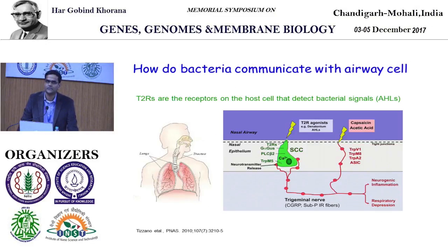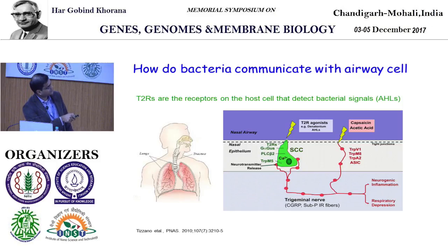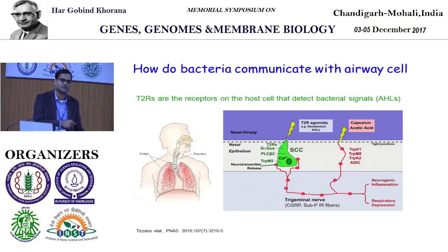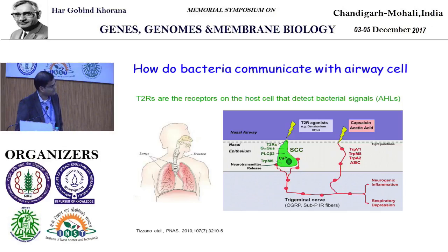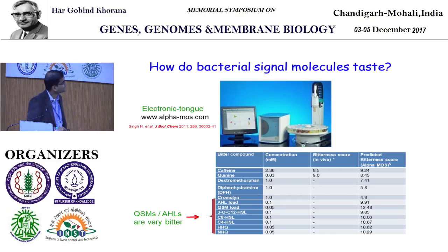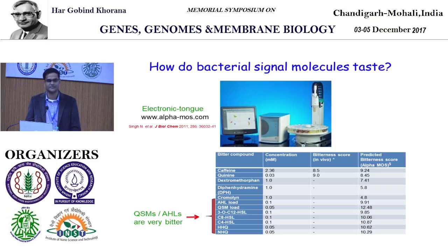Coming to the relationship between T2Rs and quorum sensing: the first study published in 2010 suggested that quorum sensing molecules — AHLs — along with T2R agonists can activate airway cells through T2Rs. After that, many studies in journals including chronic rhinosinusitis showed T2Rs are involved in interacting with quorum sensing molecules. But what's not known is how this plays in a CF condition, and how these molecules taste. Getting a human taste panel to taste these molecules is tough ethically, so we use an electronic tongue — an e-tongue.